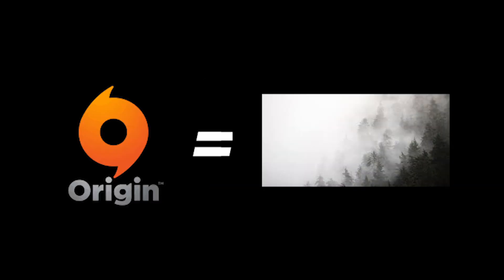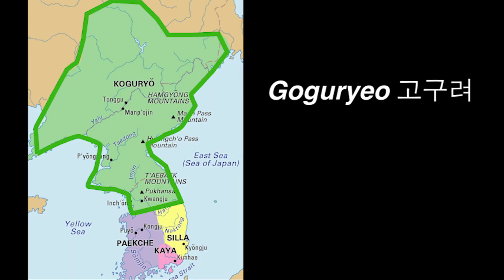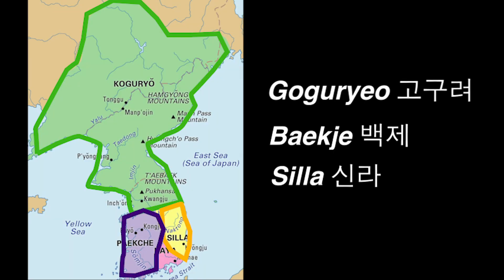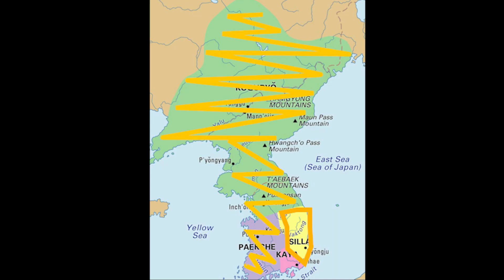Korean's origins are unclear because the first Korean texts are actually written in Chinese. Old Korean was spoken in the Three Kingdoms period of Goguryeo, Baekje, and Silla. No one really knows how related the languages of the kingdoms really were, but people generally think that the languages were fairly similar, although not the same. Then Silla conquered the two other kingdoms, and so its language became widely spoken across the peninsula.